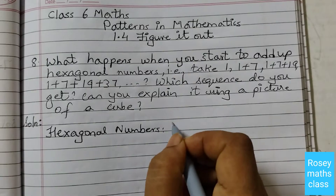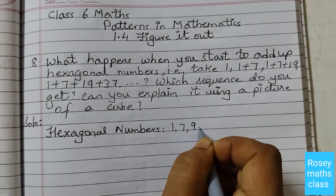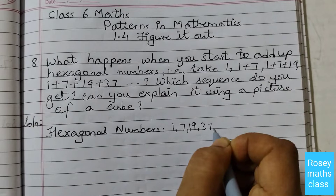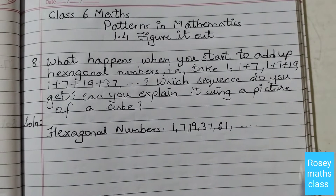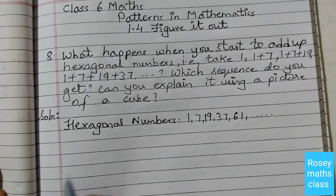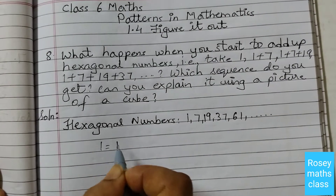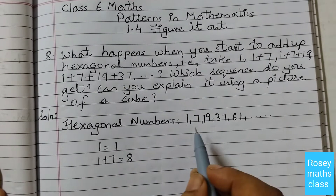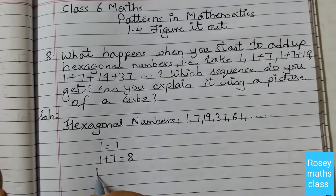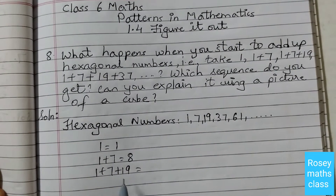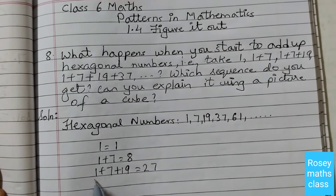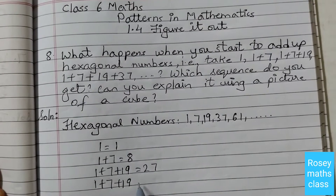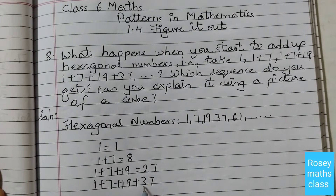Hexagonal numbers are 1, 7, 19, 37, 61, and so on. When we add starting from 1: 1 equals 1; 1 plus 7 equals 8; 1 plus 7 plus 19 — that is 19 plus 1 equals 20, plus 7 equals 27; then 1 plus 7 plus 19 plus 37 — so 27 plus 37.